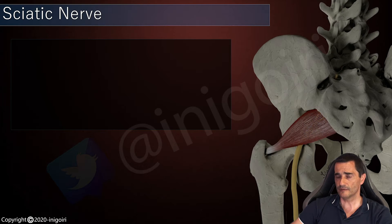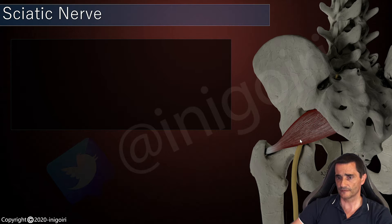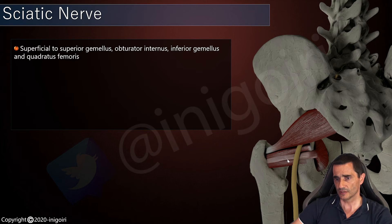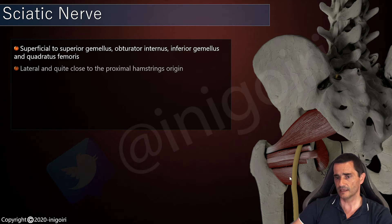Very important is the relationship between the piriformis and the sciatic nerve. The sciatic nerve is deep to the piriformis, but it becomes superficial as we go distal, and is above the superior gemelus, the obturator internus, the inferior gemelus, and the quadratus femoris, and lateral to the hamstring's origin.